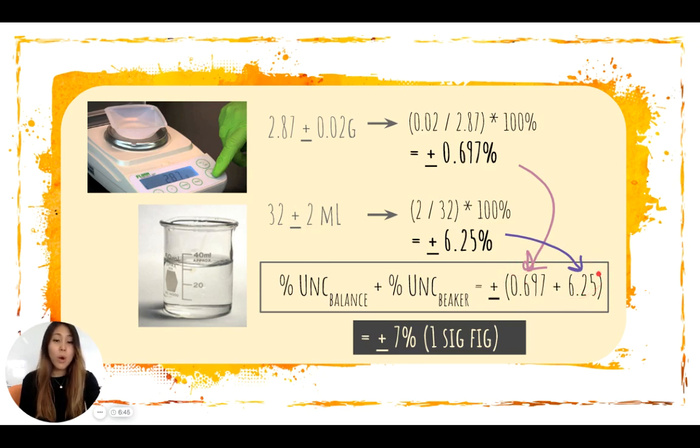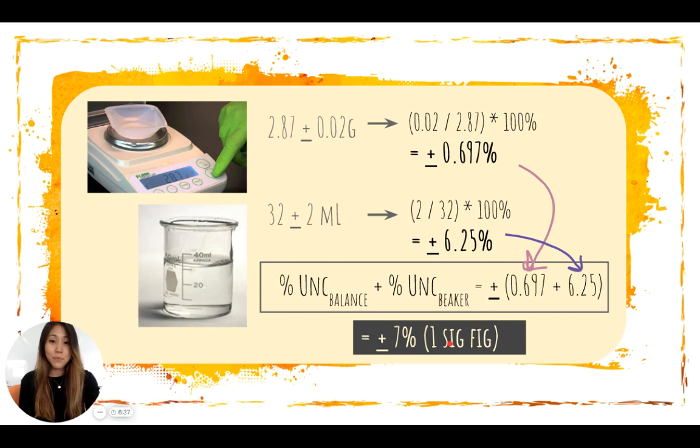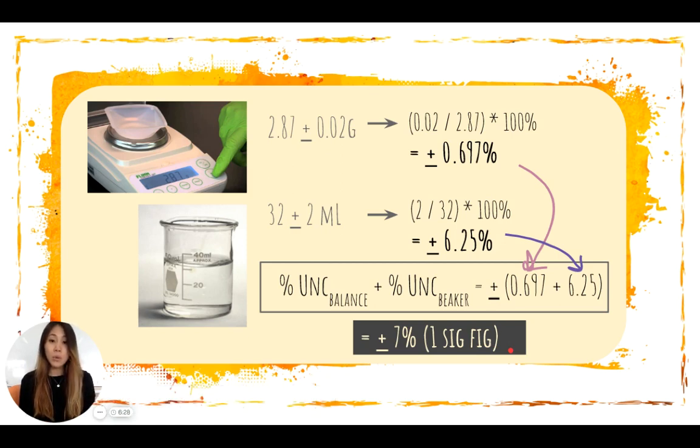We can't leave it to 1 or 2 or 3 decimal places of percentages, so we rounded it to plus or minus 7%. Now see the next video on how we can convert from this percent relative uncertainty into absolute uncertainty for the total uncertainty of the density required in this formula of salt in salt water.